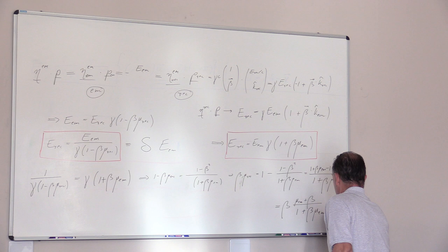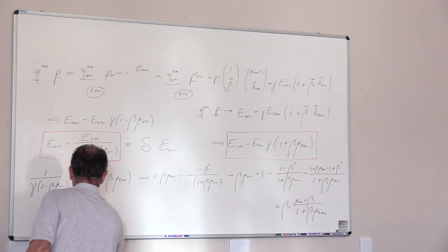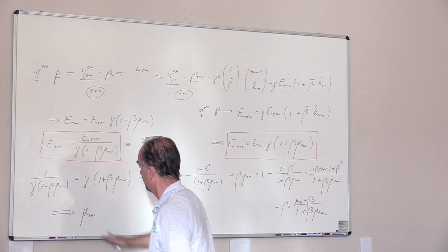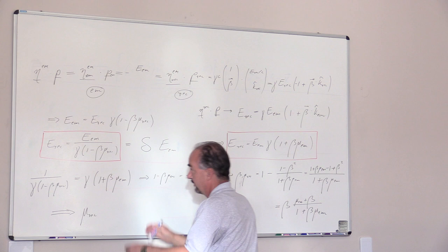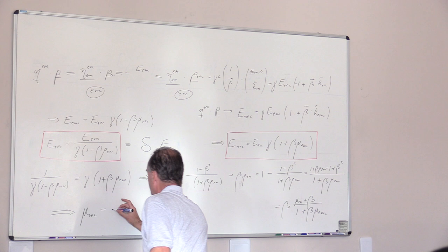Which is 1 minus βμ receiver over 1 plus βμ emitter, which equals 1 minus β squared over 1 plus βμ emitter. So what we find is that the cosine of the angle that the photon makes with respect to the direction of motion—so moving this direction, photon's here, the cosine in between them—that we see it coming in the receiver's frame, is related to the angle which was emitted in the moving frame by this expression.